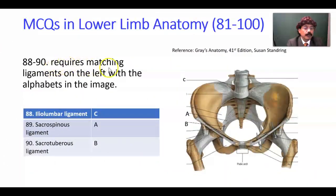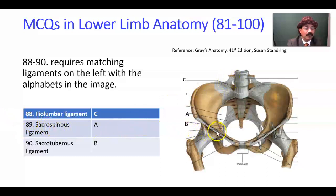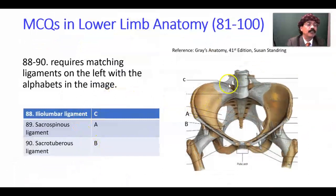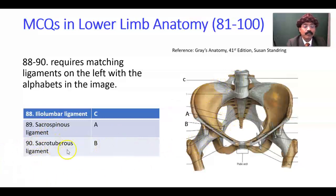Question number 88 to 90 requires matching ligaments with the alphabets in the image. Question 88: the ilio-lumbar ligament — from ilium to the lumbar — this is C. Question 89: the sacrotuberous ligament, from the sacrum to the ischial tuberosity. Question 90: the sacrospinous ligament, from the sacrum to the spine. So we have the ilio-lumbar ligament C, sacrospinous ligament A, and sacrotuberous ligament.